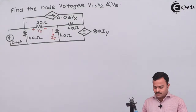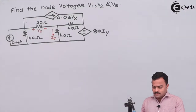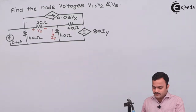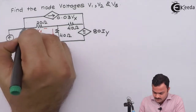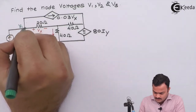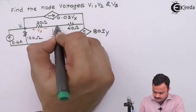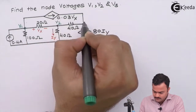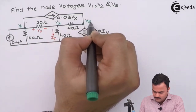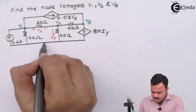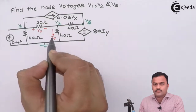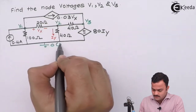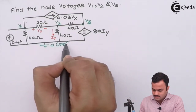Here is the problem. We have to get the node voltages V1, V2, and V3. So the node voltages are marked here — this is V1, V2, V3 — and this node is at potential zero, hence it is the reference node.